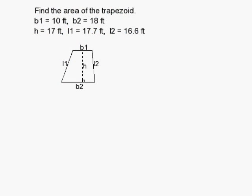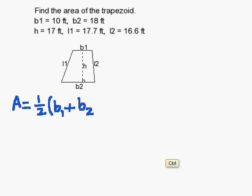How to find the area of a trapezoid. Let's go ahead and recall the equation to find the area of a trapezoid. The area is one-half the sum of the bases times the height.